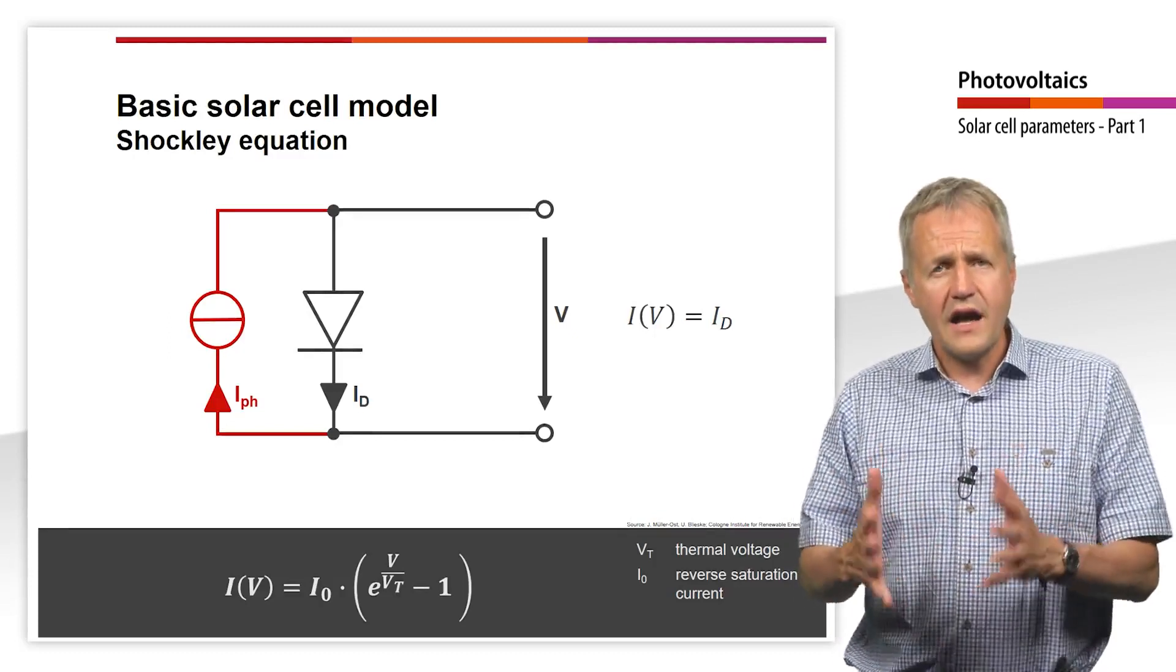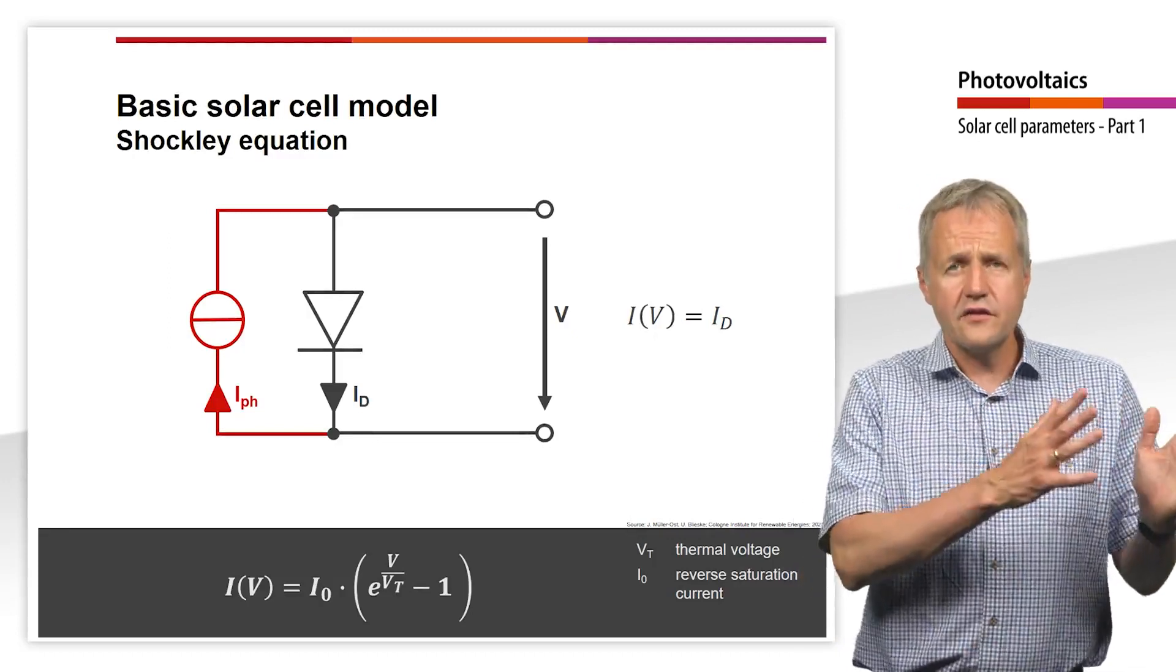Overall, the current I results from the diode current minus the photocurrent.